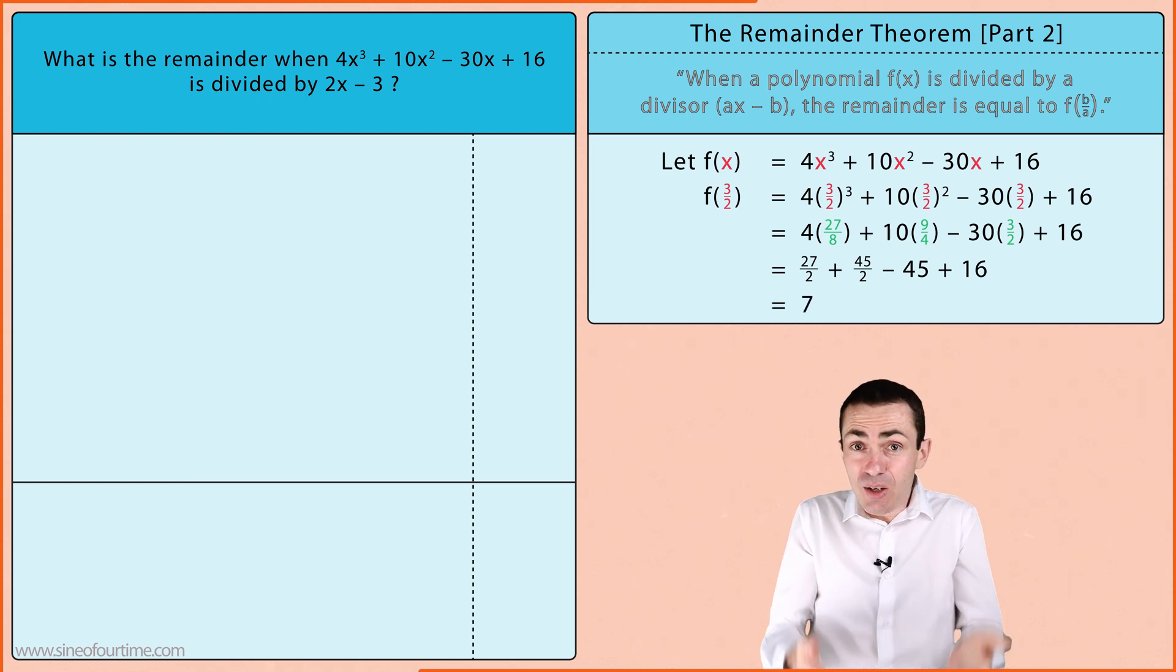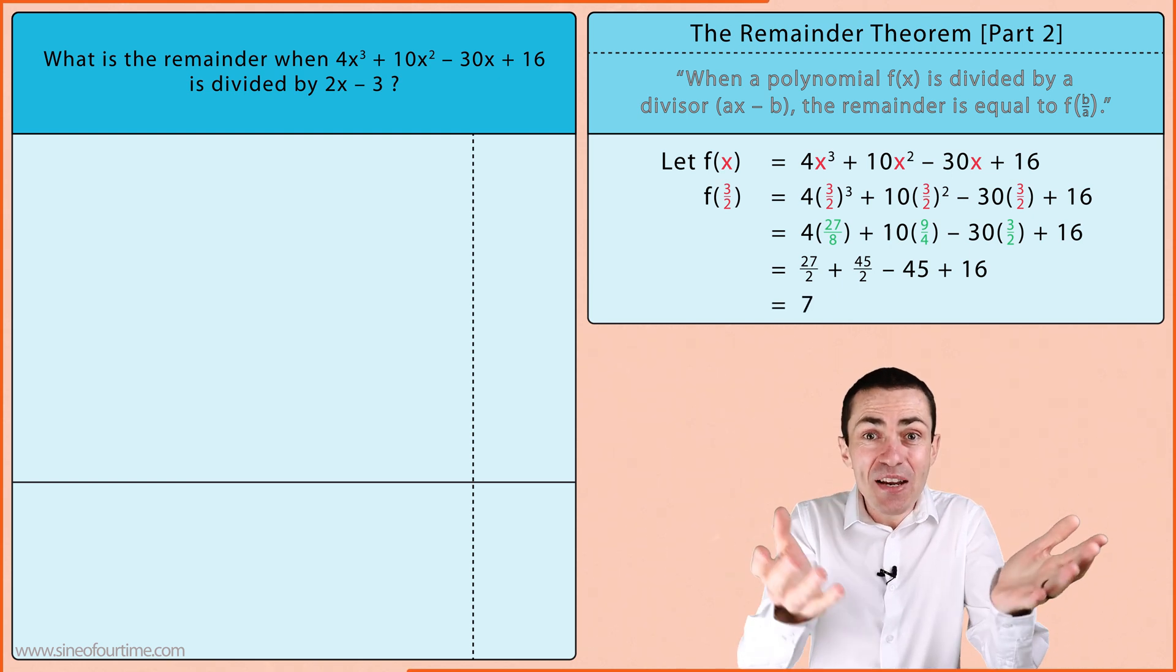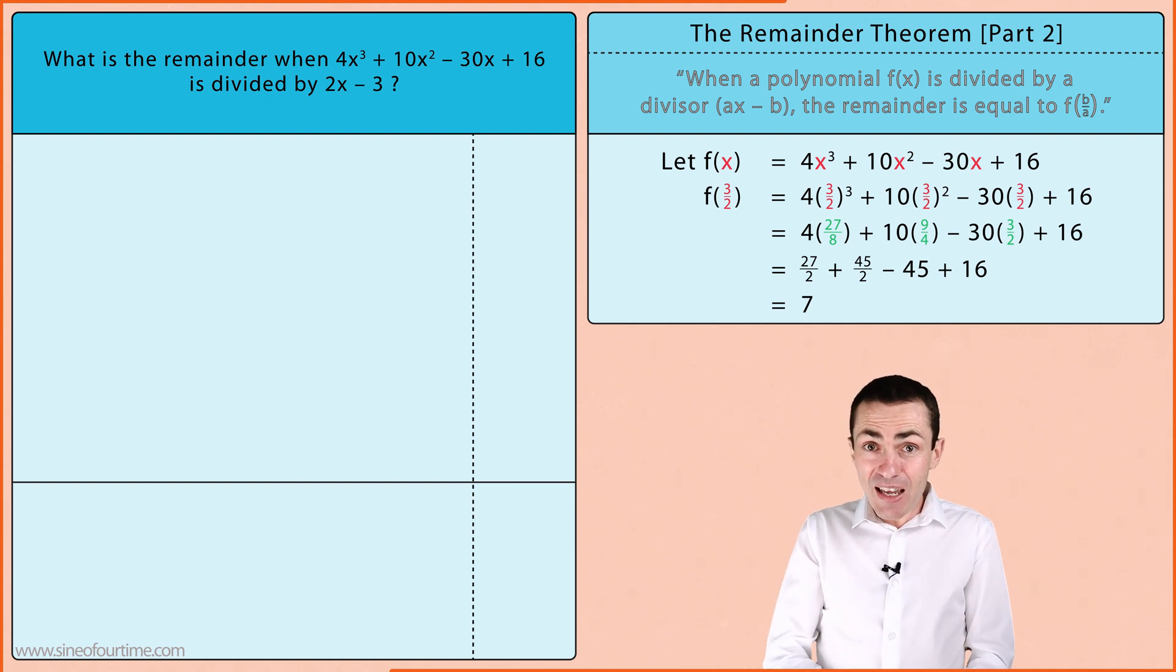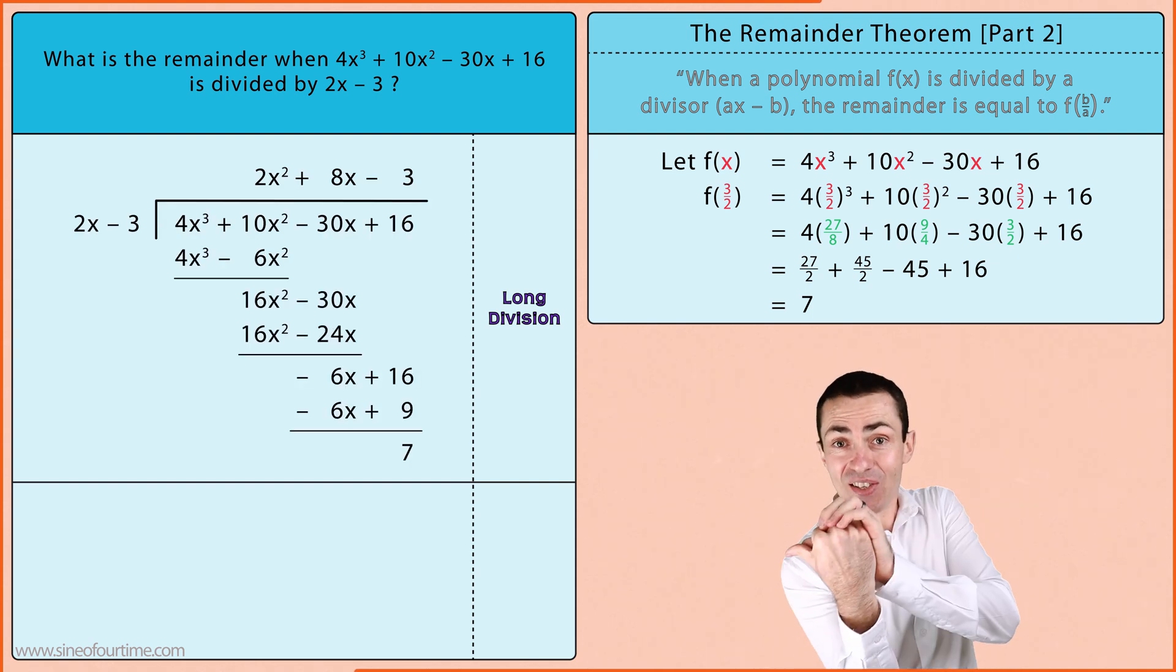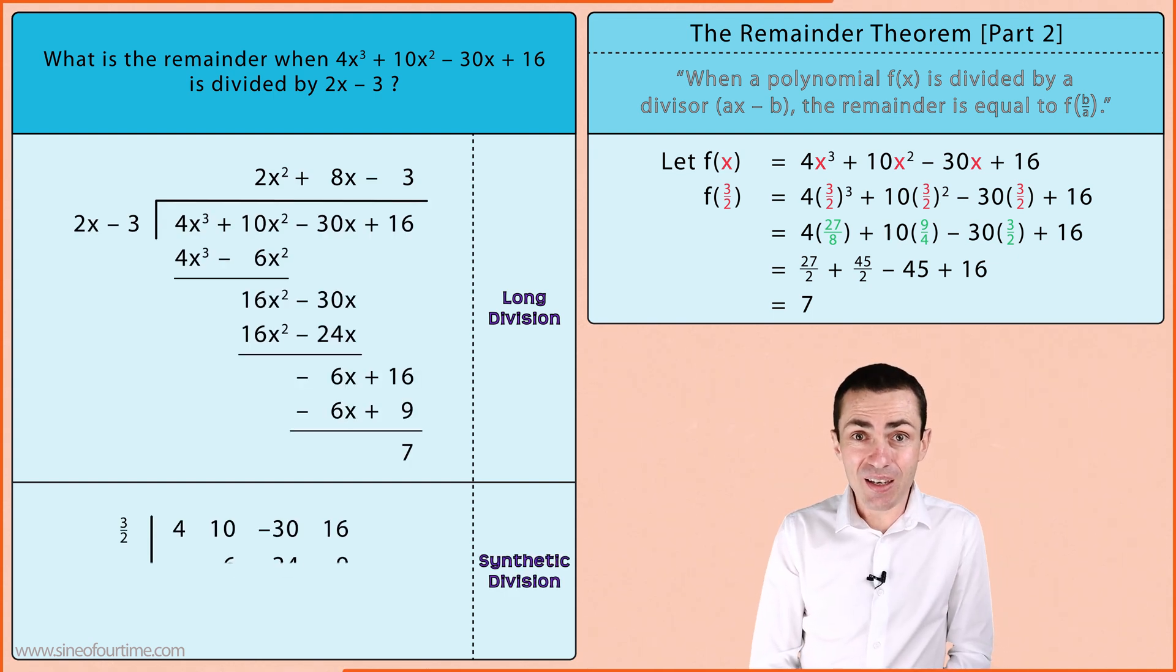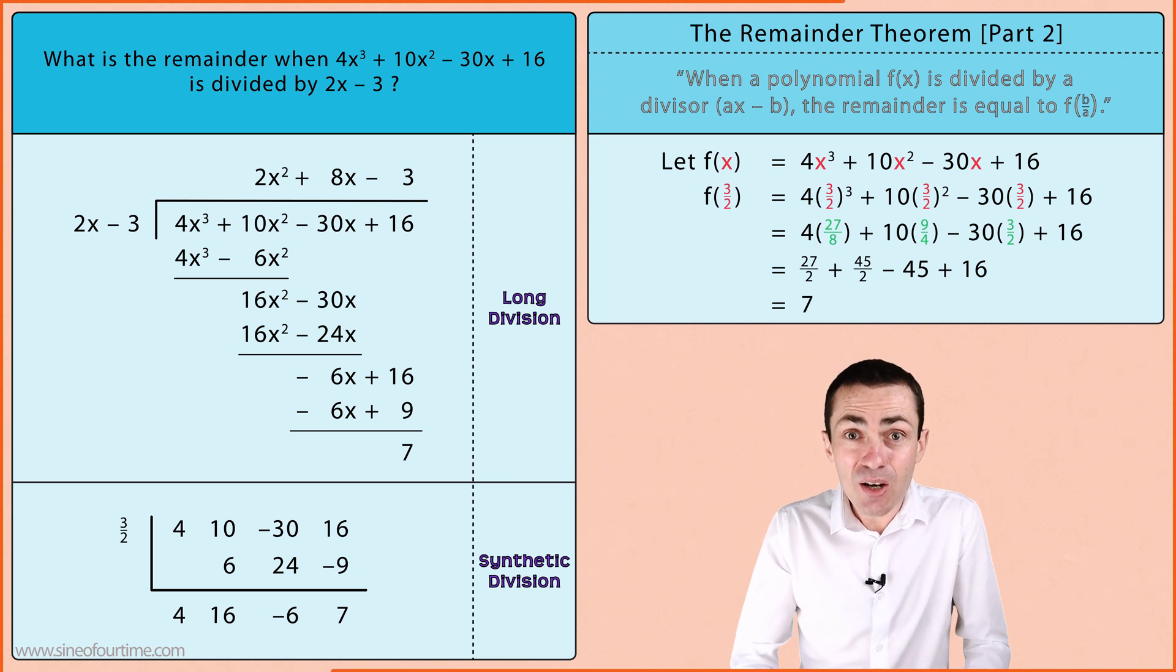So according to the remainder theorem the remainder is 7. And if you'd like you can check your work by using long division as well as synthetic division, and both of them confirm that the remainder is 7.